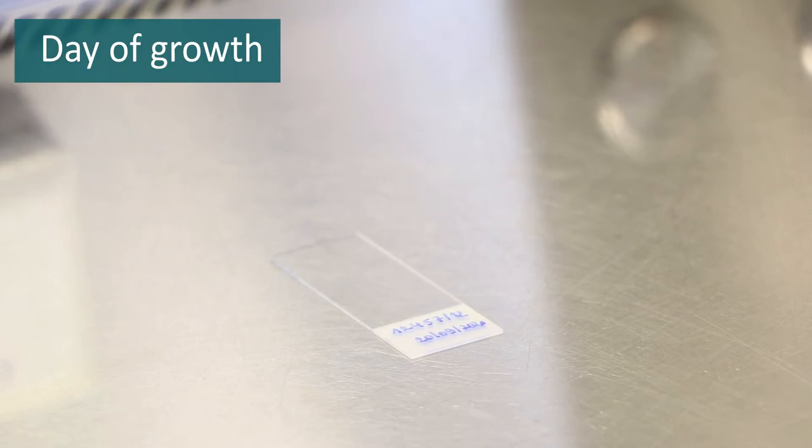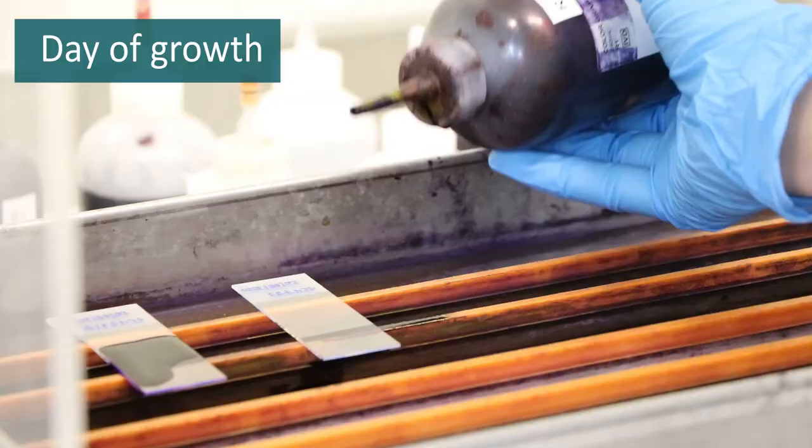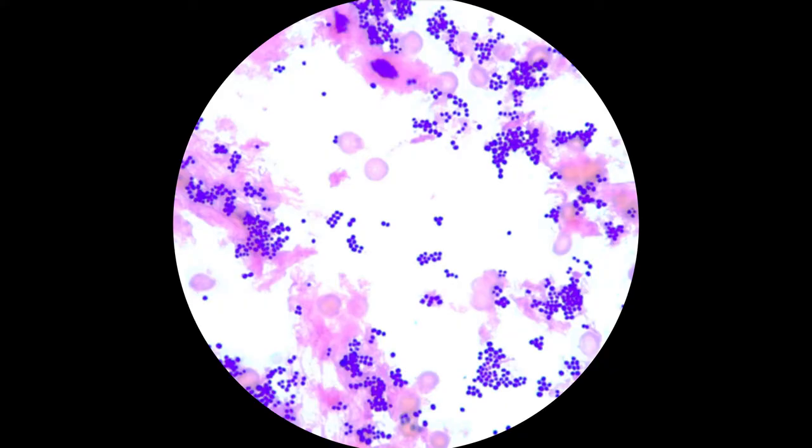How is a gram stain made? One loopful of the blood culture broth is smeared on a microscopic slide in a biosafety cabinet if available. Next, the slide is fixated and stained. The result is read with the microscope.